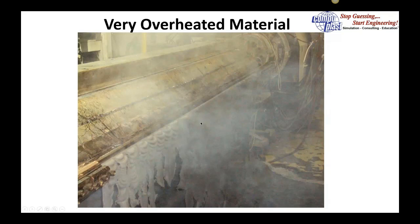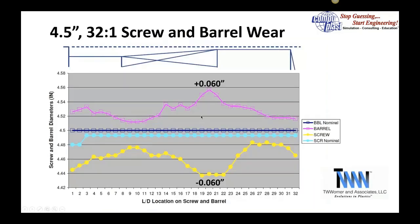When you buy an extruder or have an extruder operating for a long time, there's also the issue of wear. Here we show a measurement made by our good friend Tim Woolmer on a 4.5 inch extruder where the upper section shows the barrel wear and the bottom shows the screw wear. At the end of the barrier section, we have over 60 thousandths wear on the barrel and 60 thousandths wear on the screw. This changes significantly the performance of the screw.